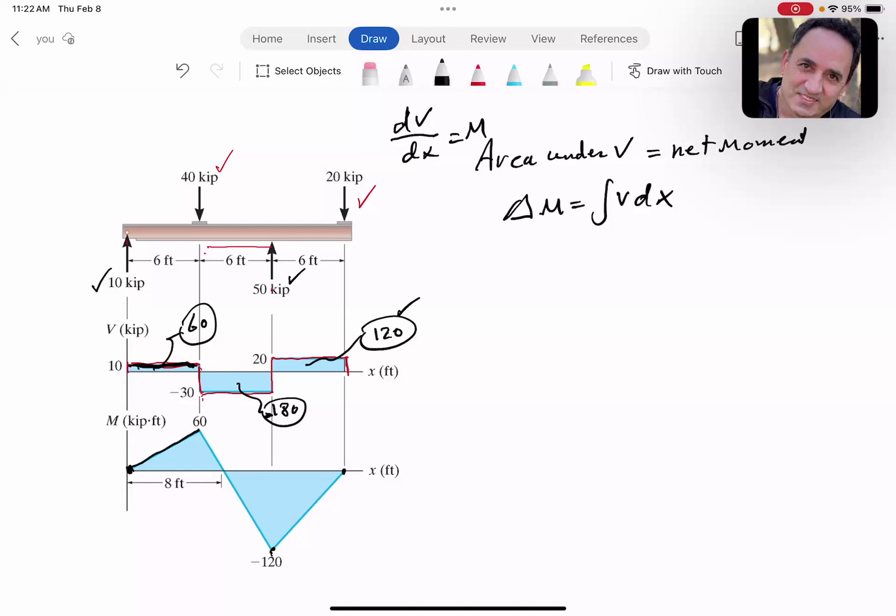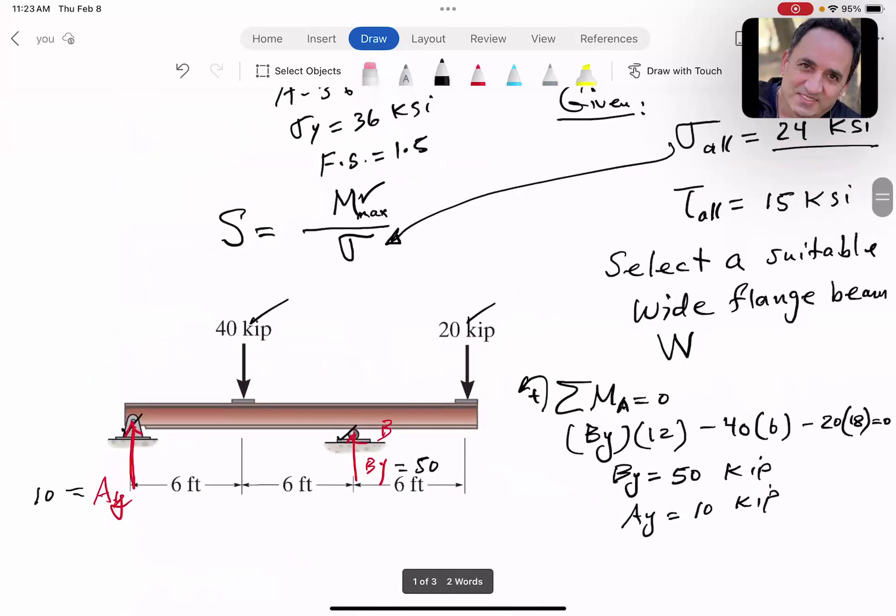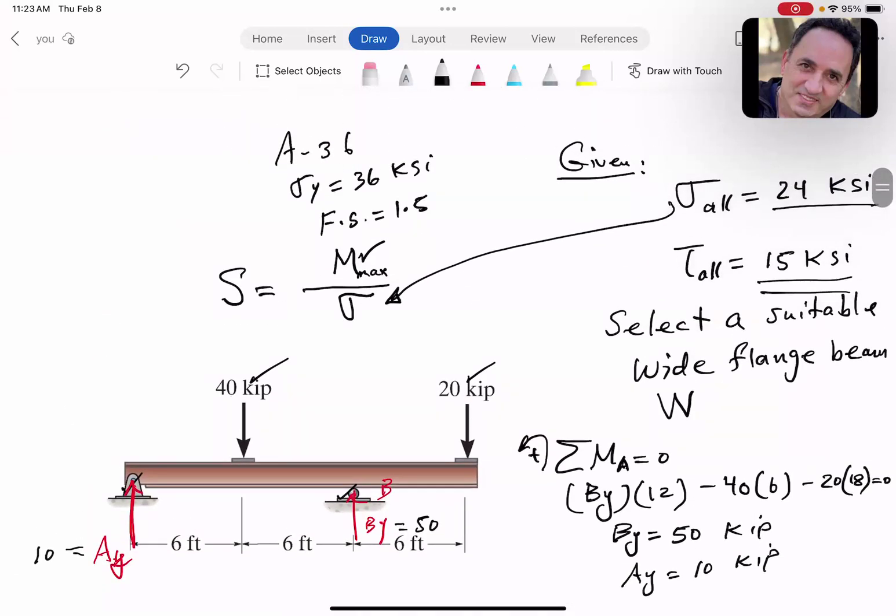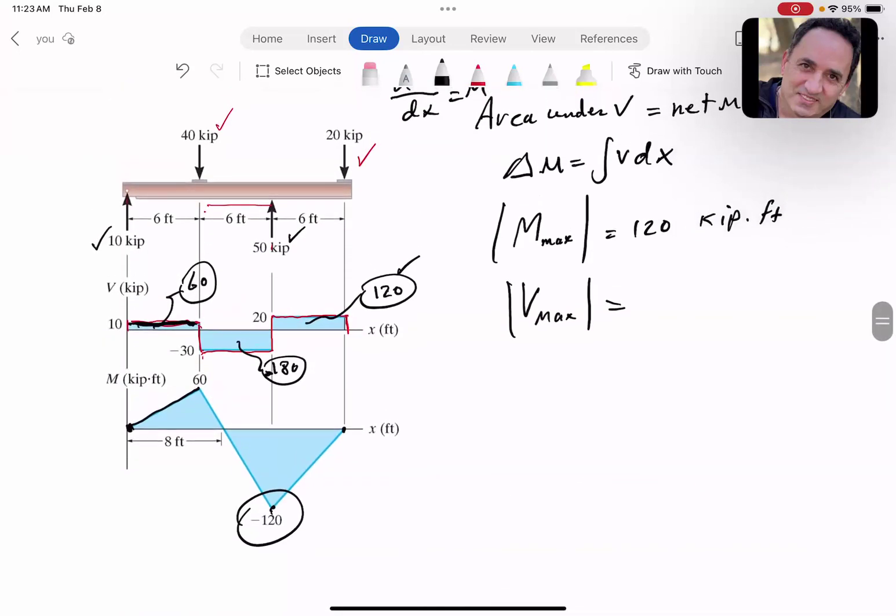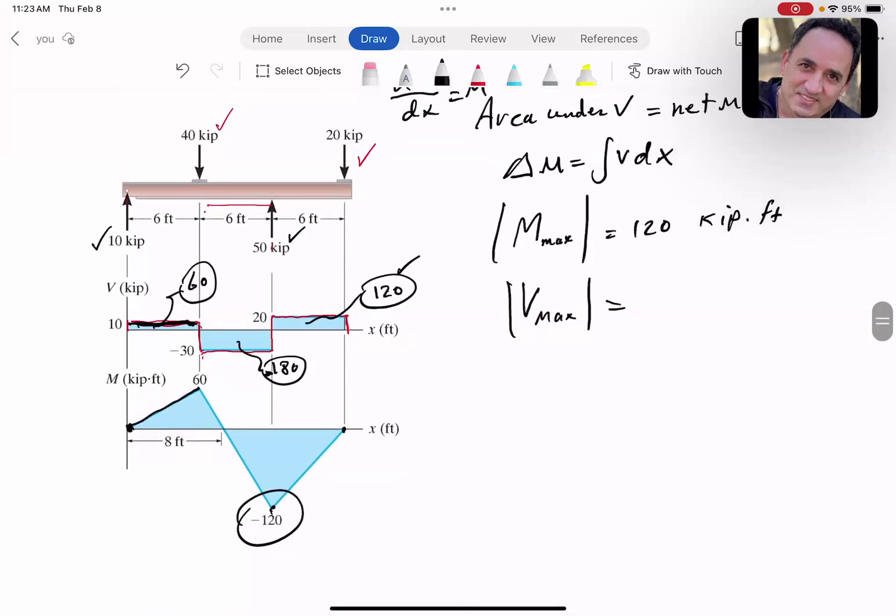What's important in this diagram? In terms of moment, the maximum absolute moment is 120 kip-ft. Don't worry about the sign; the maximum absolute is important. Also, because we're given allowable shear stress, we need the maximum shear load. The absolute maximum shear load is 30 kip. Again, the sign is not important.